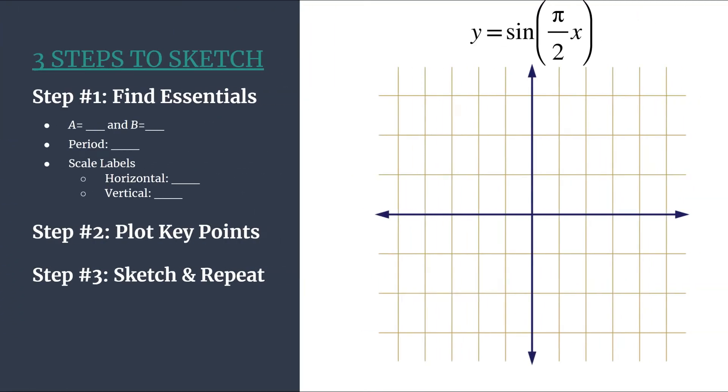As usual, we have our outline, our equation, and our grid. And we know that this is an unshifted sine graph, so we are working from the template equation y equals a sine bx, and so that will help us jump into our method.